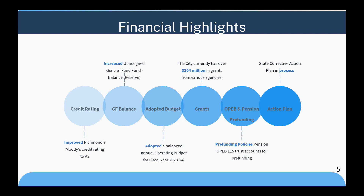Our general fund balance — we've increased the unassigned general fund balance or reserve to 21%. We started the fiscal year with a balanced adopted budget, which is great news. Revenues should equal to or exceed expenditures. In terms of grants, the city currently has over $204 million in grants, and we are making sure we effectively manage those for the programs in which they're intended. We've established pre-funding policies for our pension and other post-employment benefits, or OPEB, to reduce our unfunded liability.